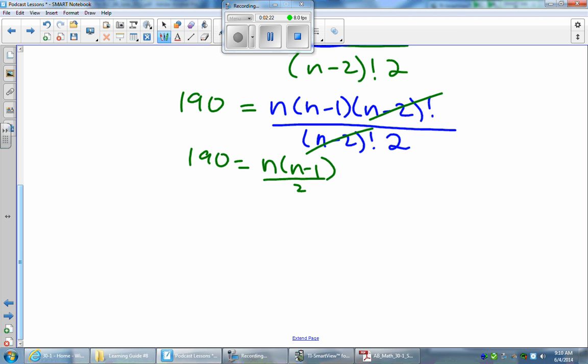So now we just go ahead and solve the equation. So if I bring the 2 over, if I multiply both sides by 2, that is, you're going to get 380 equals N times N minus 1. I can get rid of the brackets on the right-hand side here, N squared minus N. You see that we have a quadratic, so we will have to factor this if possible. So I'll bring the 380 over and I get N squared minus N minus 380.